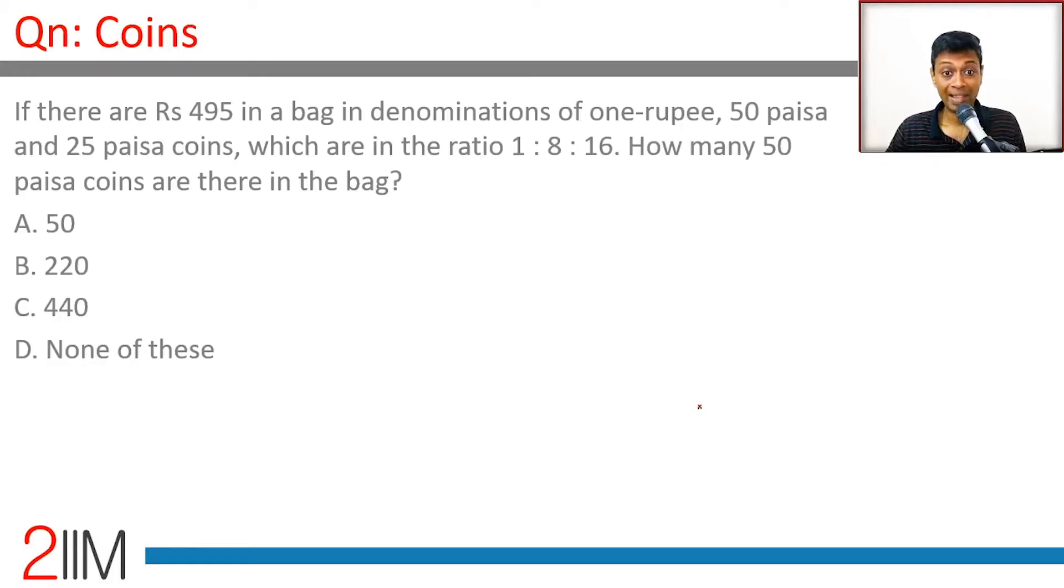If there are rupees 495 in a bag in denominations of 1 rupee, 50p, and 25p coins which are in the ratio 1:8:16, how many 50p coins are there? Say there are x coins of this type, then 8x and 16x for the others.